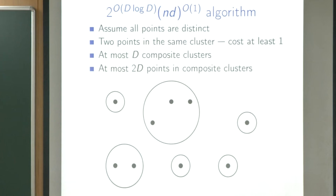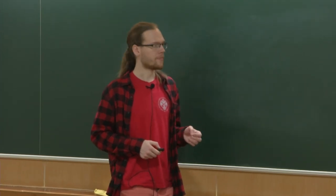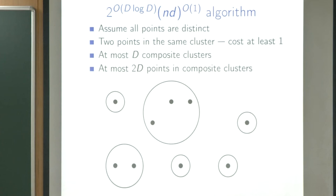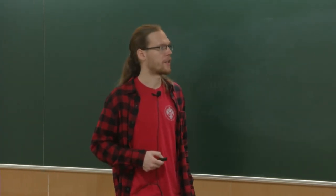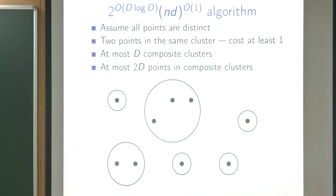I'll briefly sketch the proof. Assume the points are distinct. If you have two distinct points in the same cluster, the cost is at least one. That means we cannot have more than D composite clusters — clusters with at least two distinct points. Moreover, there can be at most 2D points in total across all composite clusters, since each contributes cost at least one. So only a small number of points are interesting; points not in composite clusters pay zero cost and don't contribute anything.